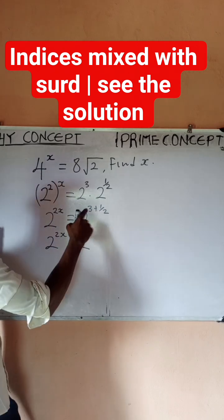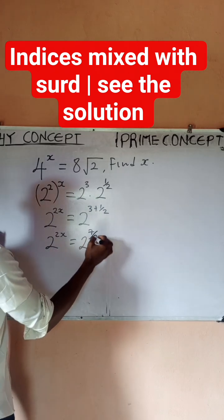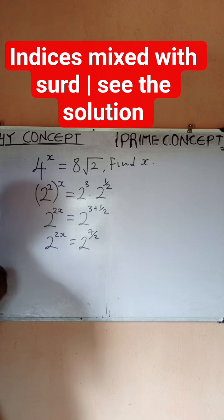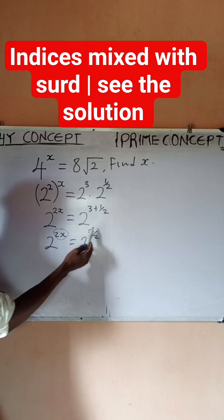Three plus half, so I have two to power two x equals two to power - it's going to be six, seven over two, right.